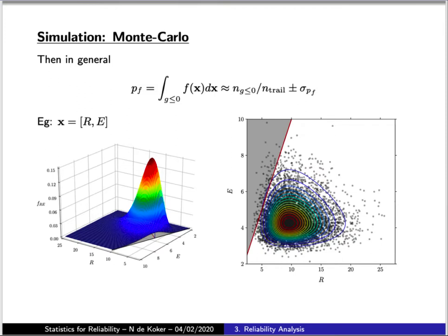Another approach is to perform random sampling of a set of values according to the distributions of your individual parameters. For each combination of values, compute the performance function and see whether it is larger than or smaller than zero. What you then do is count up how many points corresponded to states of failure and compute what fraction that makes up of the total points to get your probability of failure.